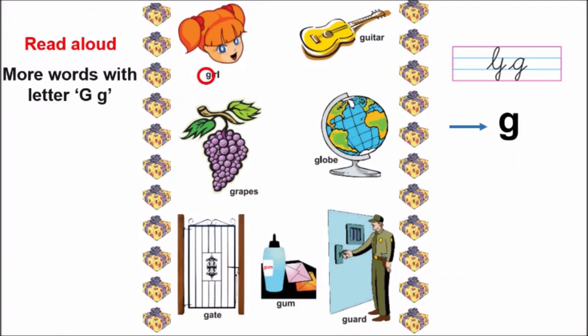Now, let us look for G in grapes. Correct. Now, find G in gate. Excellent. Now, G in guitar. Amazing. Now, look for G in globe. Very good. Now, G in gum. Great. Now, look for G in guard. Amazing. You found all small print G in all the words.